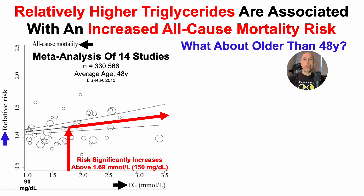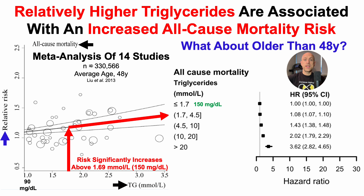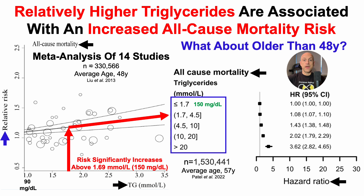So what about older than 48 years? That's what we'll see in this study, which included more than 1.5 million people with an average age of 57 years at the baseline visit. On the x-axis, we've got hazard ratio, or all-cause mortality risk, plotted against circulating levels of triglycerides on the y-axis. When looking at less than 1.7 millimolar, or less than 150 milligrams per deciliter, which was defined as the referent, all values above that were significantly associated with an increased all-cause mortality risk.